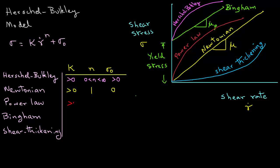In the case of a Power Law liquid, the consistency coefficient will be greater than zero, the value of n will be between zero and one, and again sigma zero will be zero.